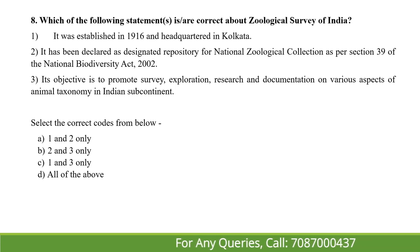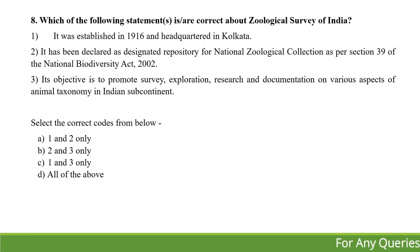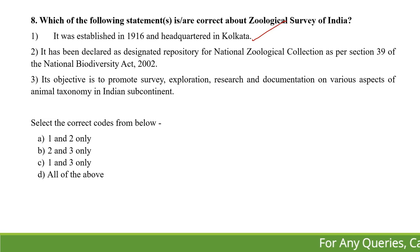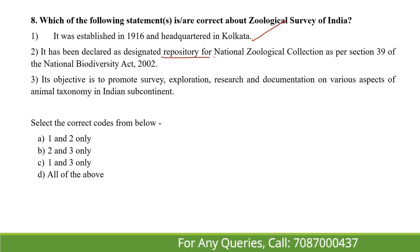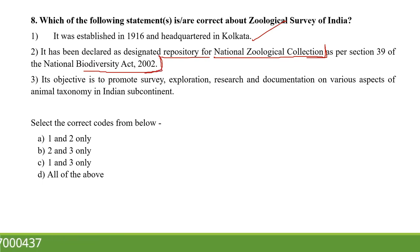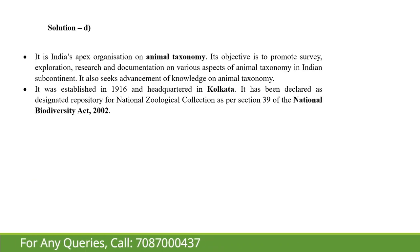Which of the following statements is or are correct about the Zoological Survey of India? First, it was established in 1916 and is headquartered in Kolkata. Second, it has been declared as the designated repository of national zoological collections as per Section 39 of the National Biodiversity Act. Third, its objective is to promote survey, exploration, research, and documentation on various aspects of animal taxonomy in the Indian subcontinent. All three statements are correct — so the answer is D, all of the above. It is the apex organization in animal taxonomy, and its main purpose is to promote research and development in this field.